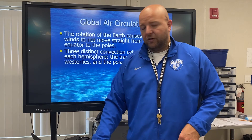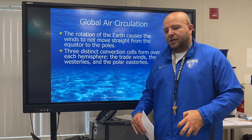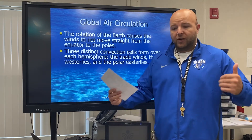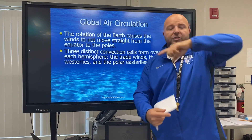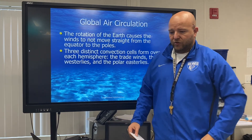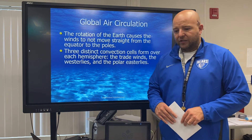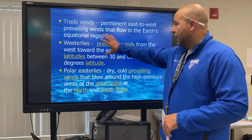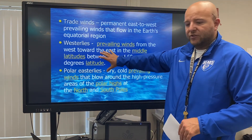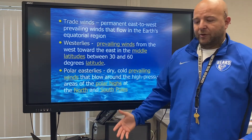Global air circulation. The rotation of the Earth causes the winds to not move straight from the equator to the poles. The winds are trying to head from the equator to the poles, but because of Earth's rotation, those winds are pushed into a circular sort of pattern. These distinct circular patterns are called convection cells. They form over each hemisphere and create trade winds, westerlies, and easterlies. We're going to define each of those terms.